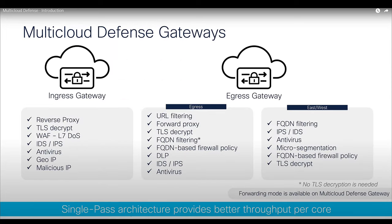Let me double-click on Multi-Cloud Defense Gateways. We provide an Ingress Gateway and an Egress Gateway. The Ingress Gateway is for protecting your inbound traffic, and the Egress Gateway is for protecting your egress traffic and can also provide security for your east-west traffic flow. At a very high level, we provide features like Proxy, TLS Decrypt, WAF, IPS, IDS, Antivirus, GeoIP, and MalIP. All these security services are deployed as a single-pass architecture — we don't add complex service chaining. All the features are part of the single-pass architecture, giving us better throughput per core as well.